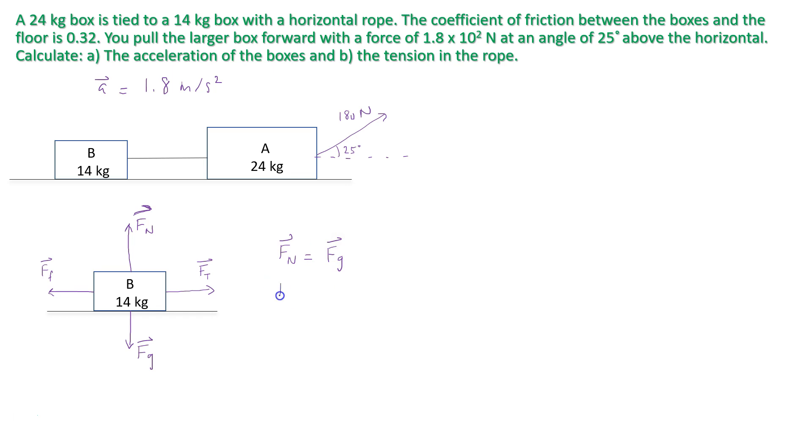And so the normal force is going to equal the mass of box B in this case, times the acceleration due to gravity. So that would be 14 times 9.81, which is equal to 137.34 newtons.